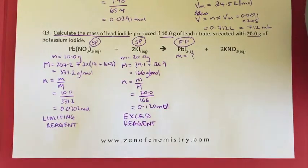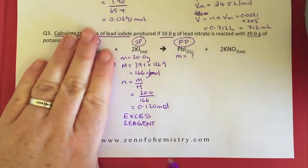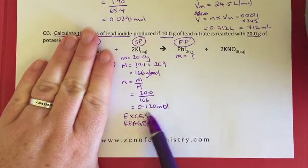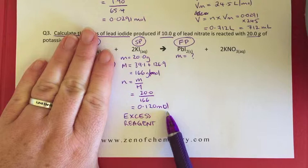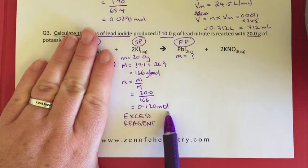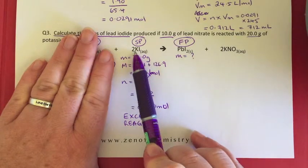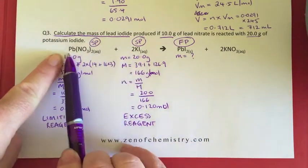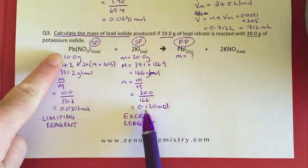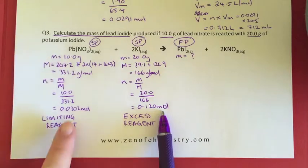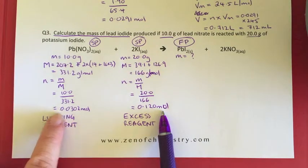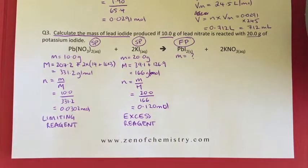Now sometimes this can be tricky in your head. I'm going to go back the other way just as proof of concept. If we have 0.120 moles of potassium iodide, if we had that much we would need half of that, because we've got a one to two ratio, half of that of lead nitrate. We would need 0.06 moles of lead nitrate and we've got not enough. We've only got 0.0302 moles. So that again reiterates that this is definitely our limiting reagent and this is definitely our excess reagent.